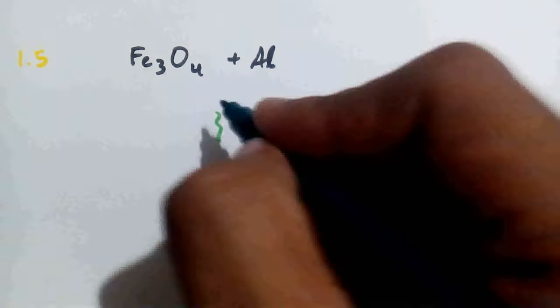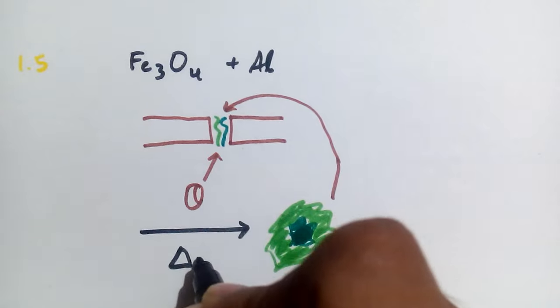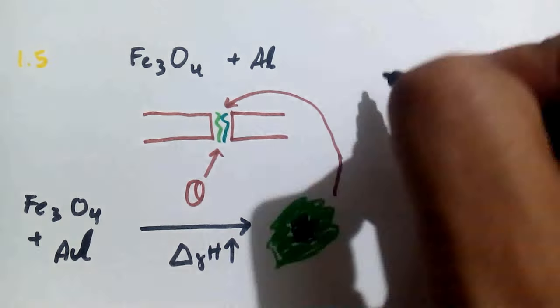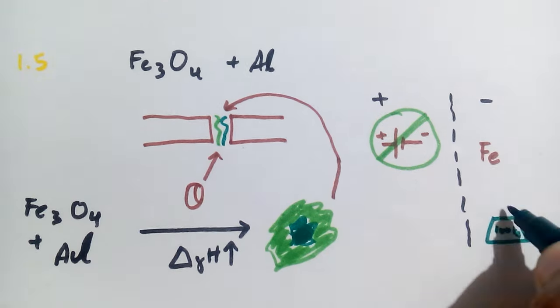Fifth and last is thermochemical or thermite welding. Here, coalescence is achieved by heating with superheated liquid metal and slag resulting from chemical reaction between metal oxide and aluminum, leading to an exothermic reaction. Advantages include no electricity requirement but is only applicable for ferrous metal parts of heavy cross sections.